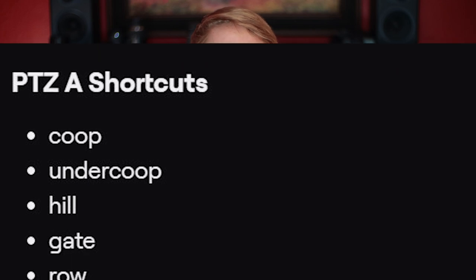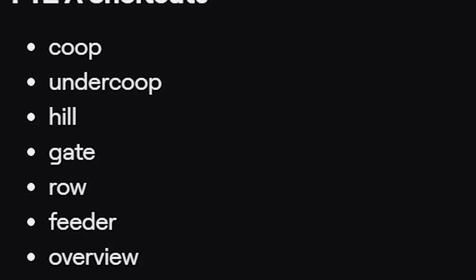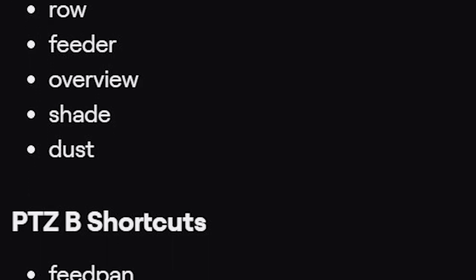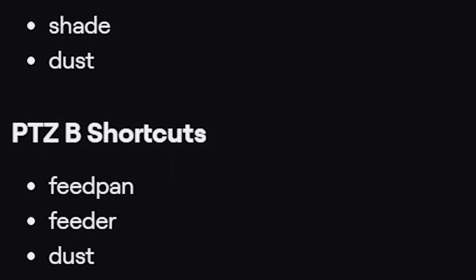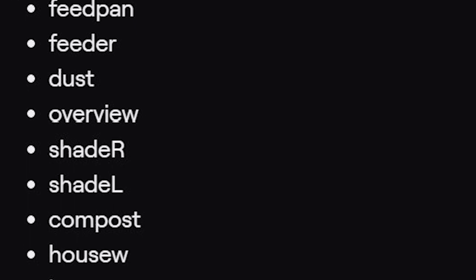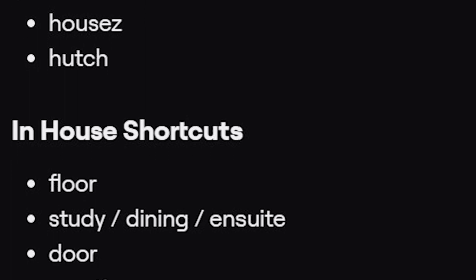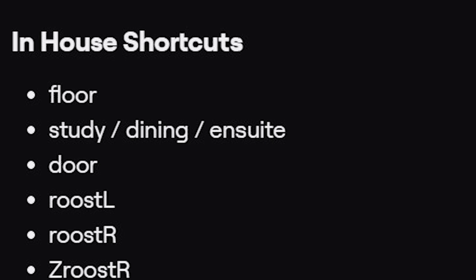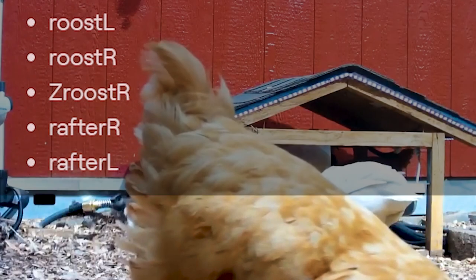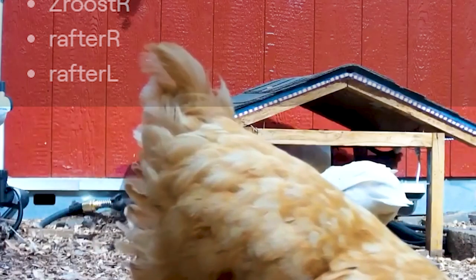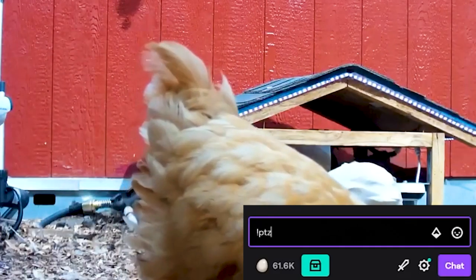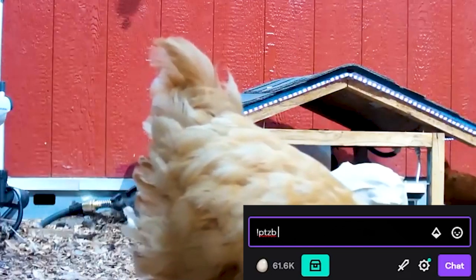Last thing to know about the cameras is that a lot of the cameras have shortcuts to the optimal angles. These shortcuts and all instructions for changing the cameras are in the info section on the rchickenlife Twitch page. To use these shortcuts, you type the camera then the shortcut, such as PTZ-B compost.